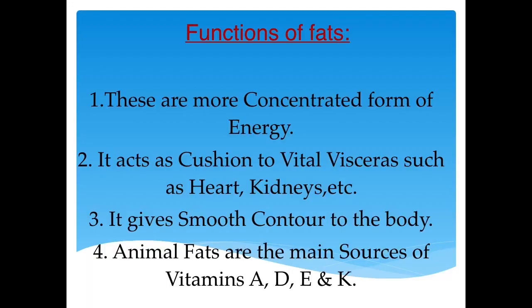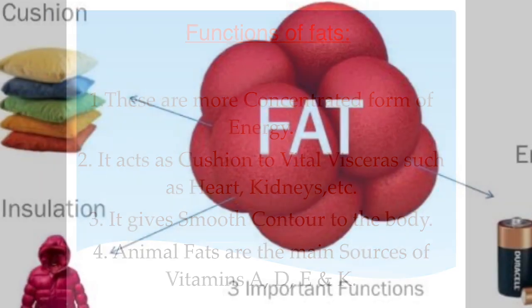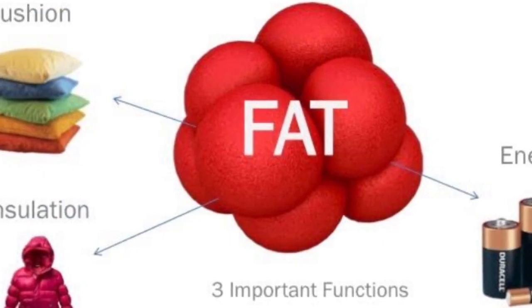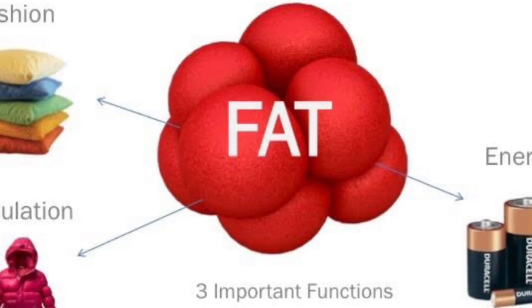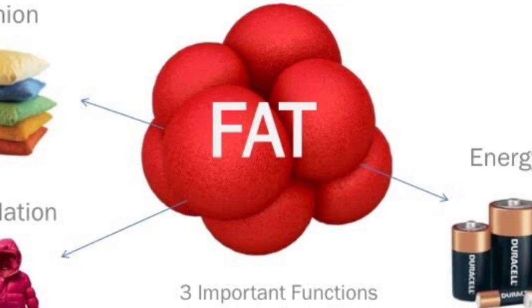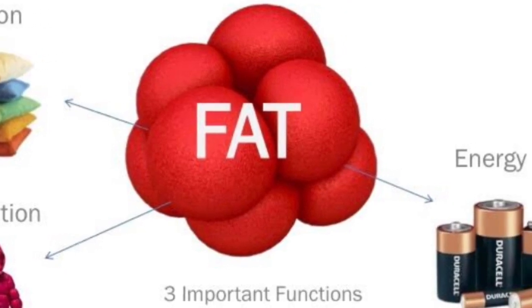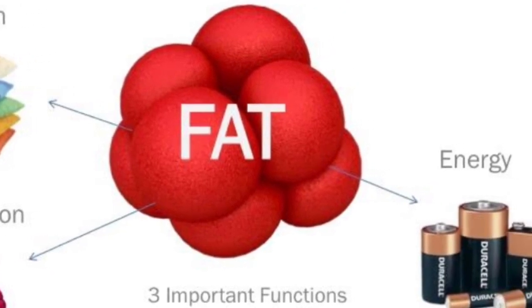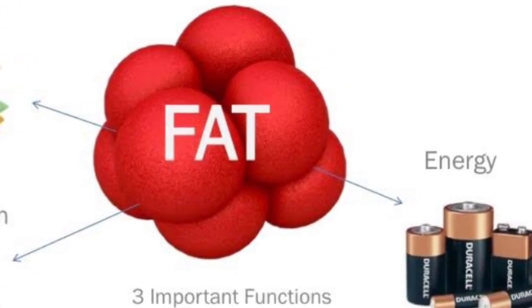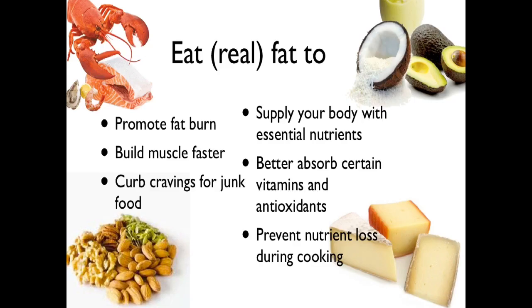Functions of fats: they are a more concentrated form of energy. They act as a cushion to vital organs such as the heart and kidneys. Animal fats are the main sources of vitamins A, D, E, and K.